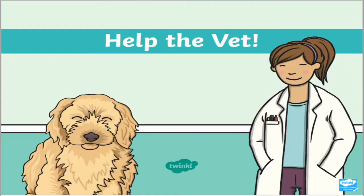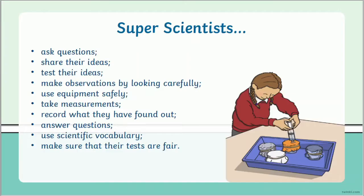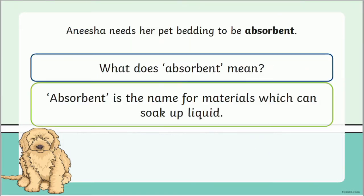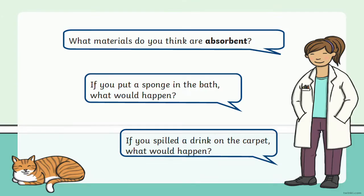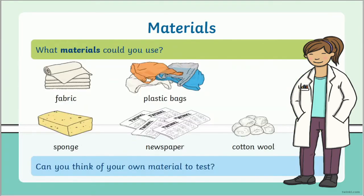If you want something a little bit different, you can also check out these Help the Vet resources, including a PowerPoint presentation and a worksheet where learners are guided through a process of experimenting with materials and thinking about what would be the most appropriate thing to use for a pet's bedding. This kind of activity helps give context to a task and gives learners a bit of a mission to accomplish.